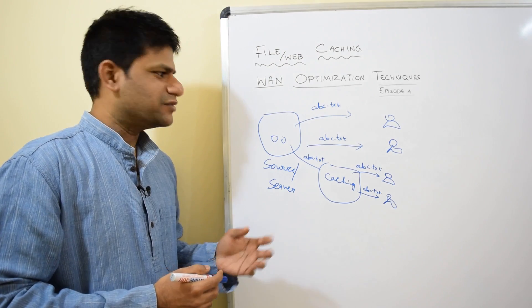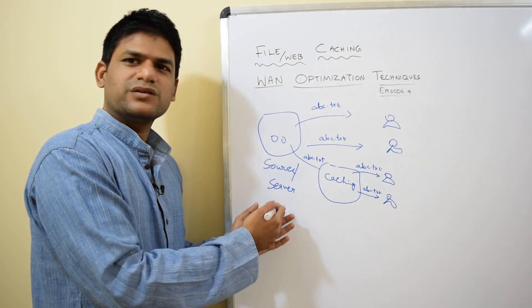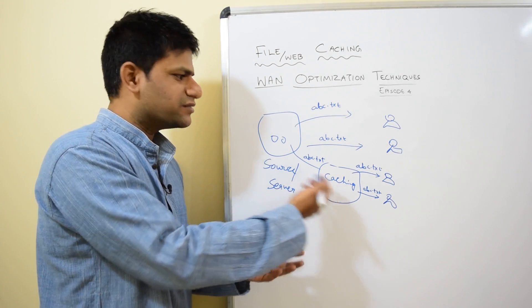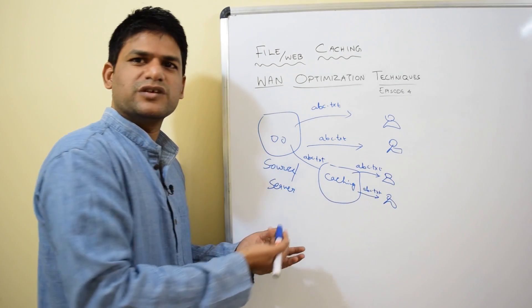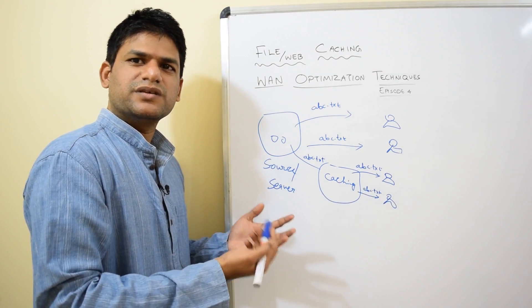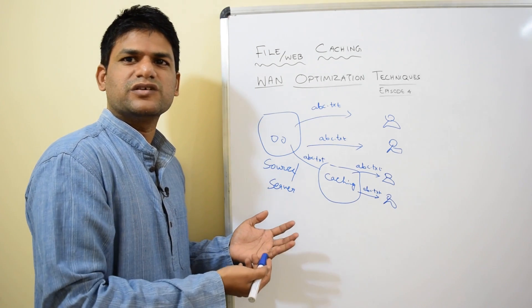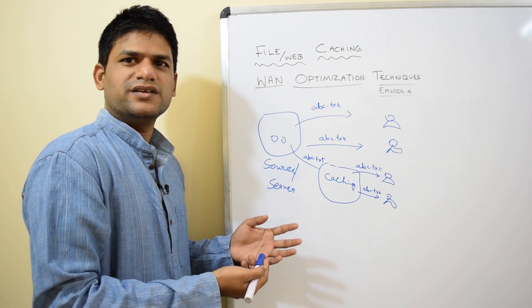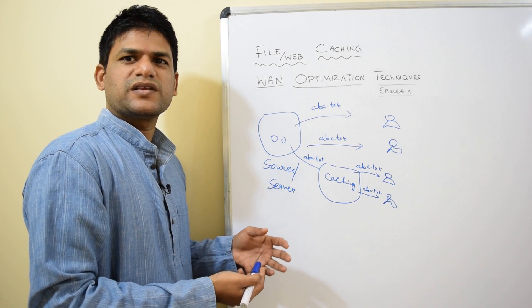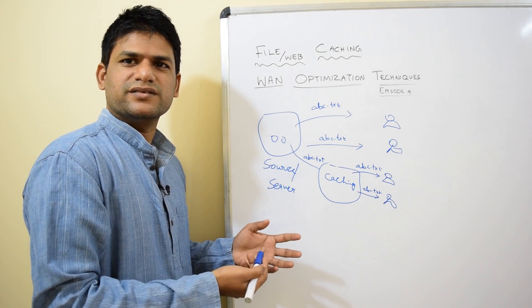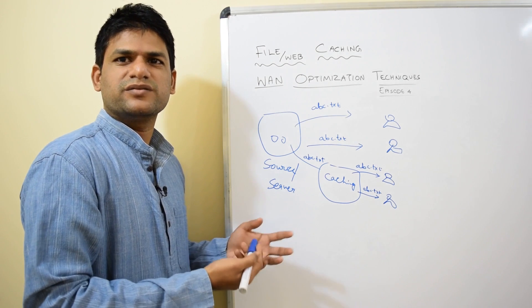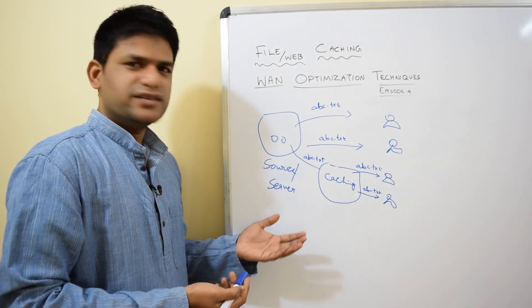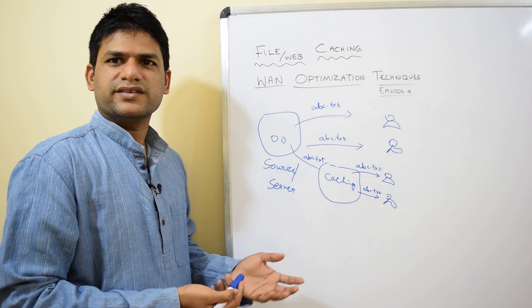However, there are certain challenges with a file caching strategy. One of the biggest challenges is: if the source file changes, the caching server should know that and cross-check every time there is a request from a user whether the source file has changed. Sometimes you may have some sort of expiry field in web traffic. These are the limitations and things to be taken care of when doing file caching.